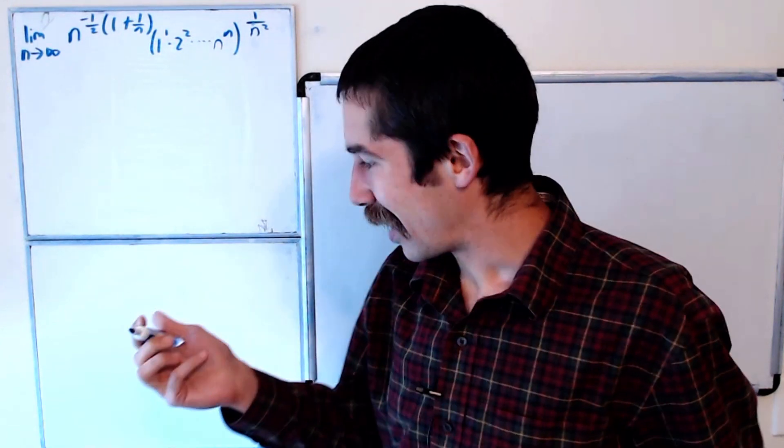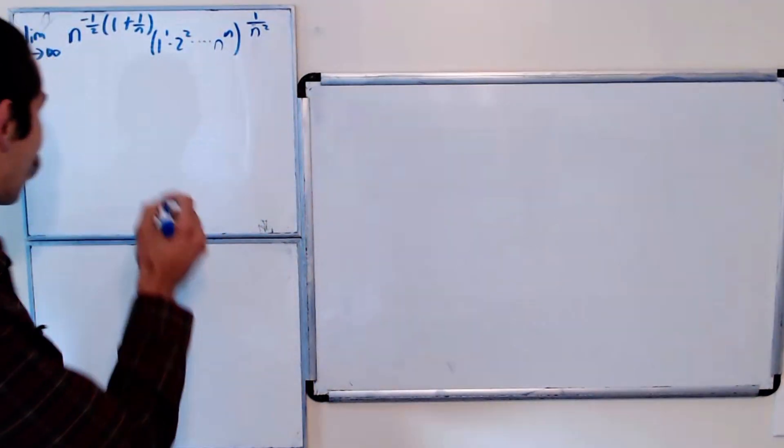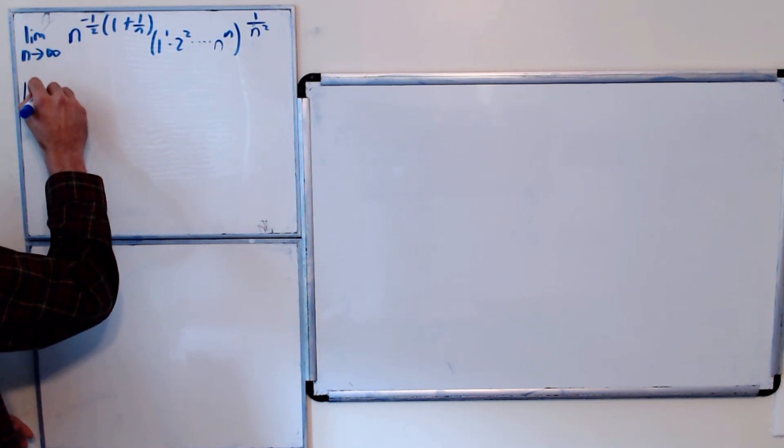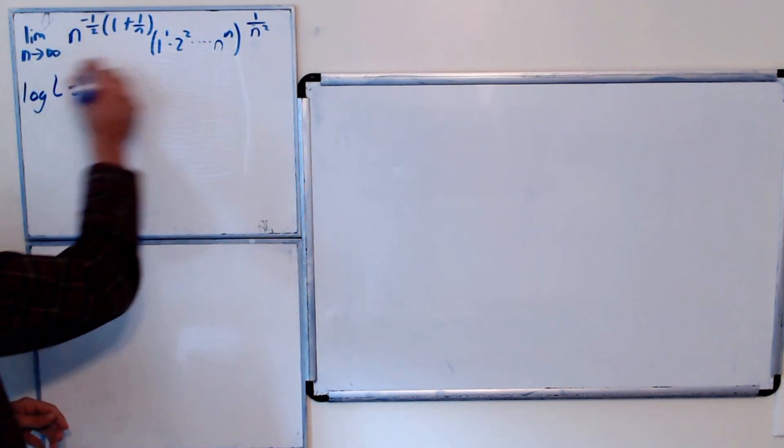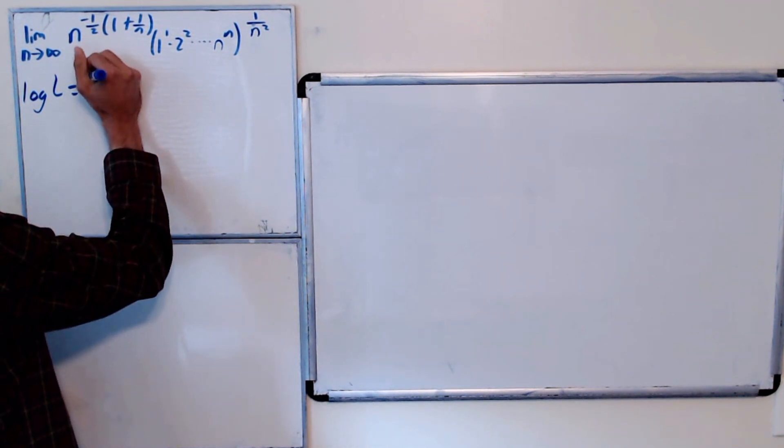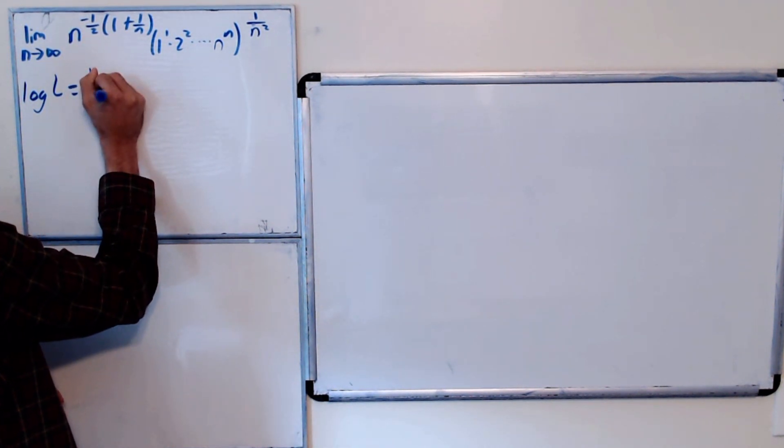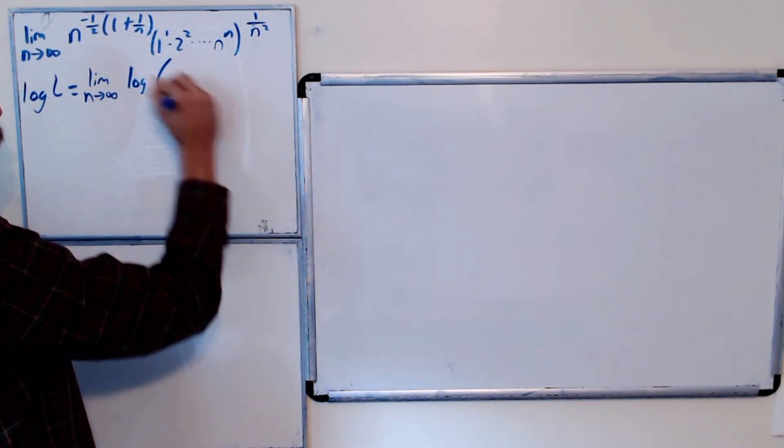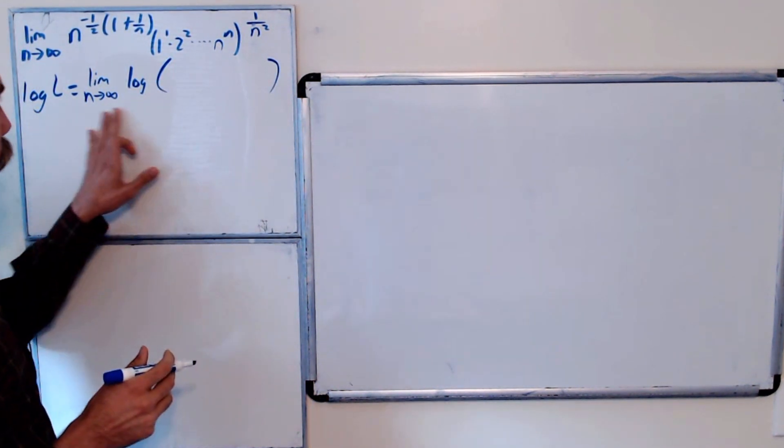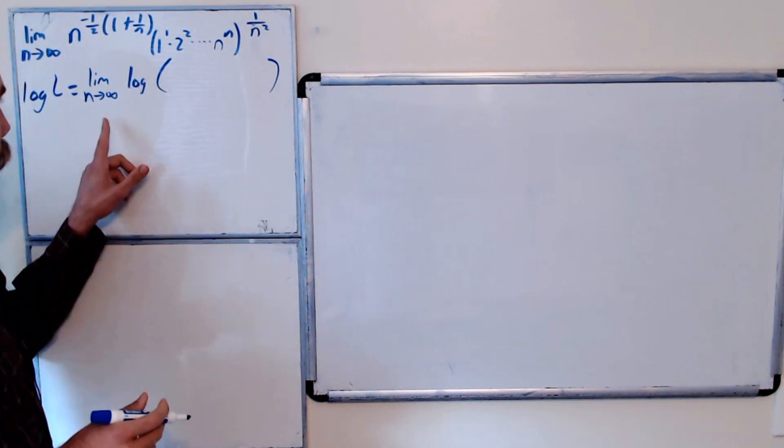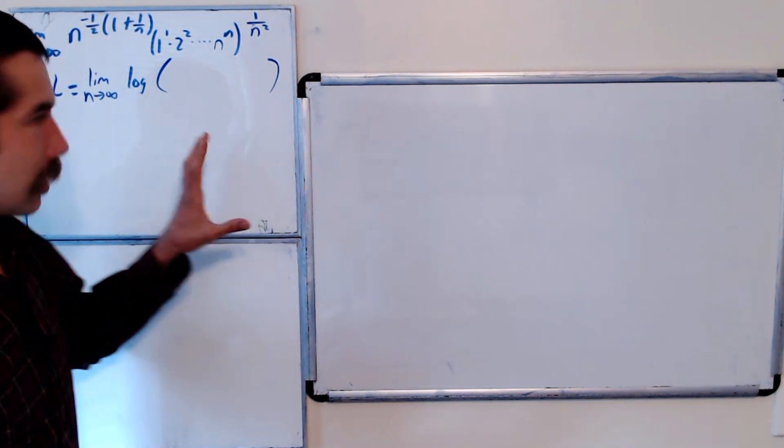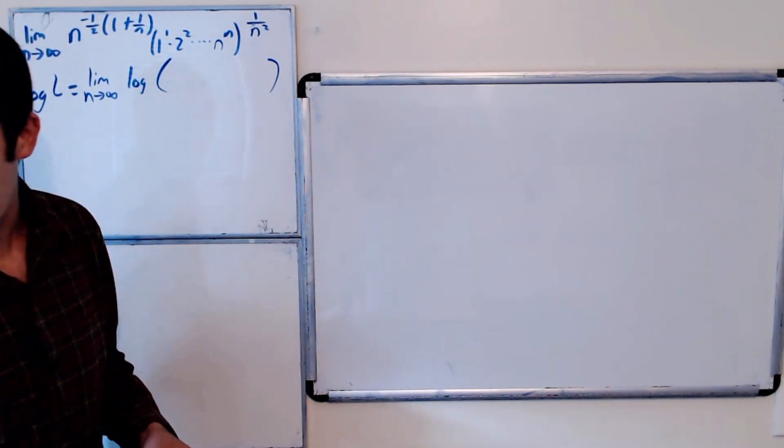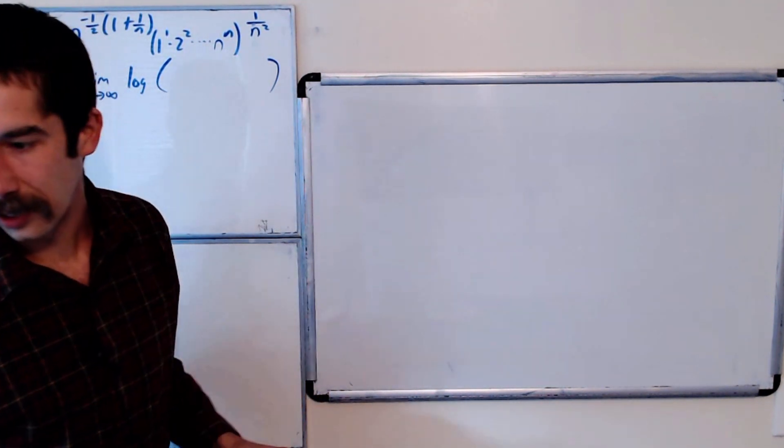So the first thing we'll do is let's call this limit L and we'll take the natural log of both sides. So log of L is equal to the limit as n goes to infinity of the log of this whole thing here. Okay, and so we're going to solve for log of L and then we'll raise e to the power at the end. And I'll do all the work on this board because this board is a little bit cleaner.